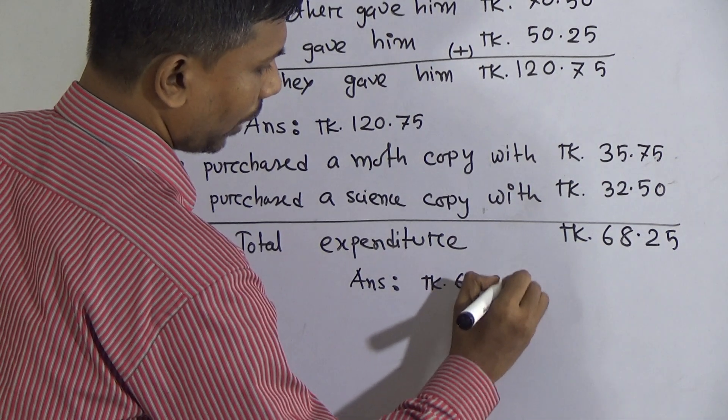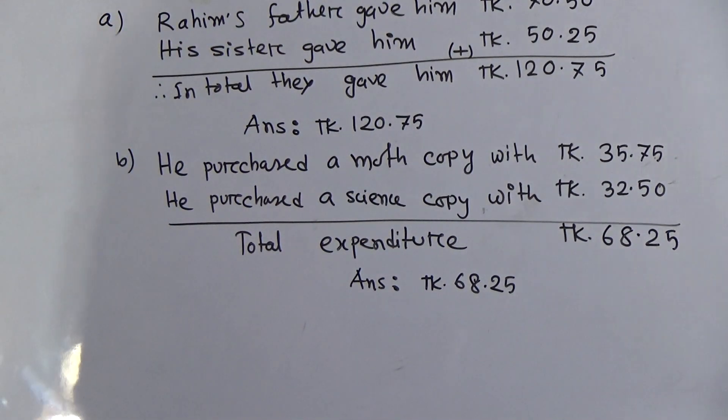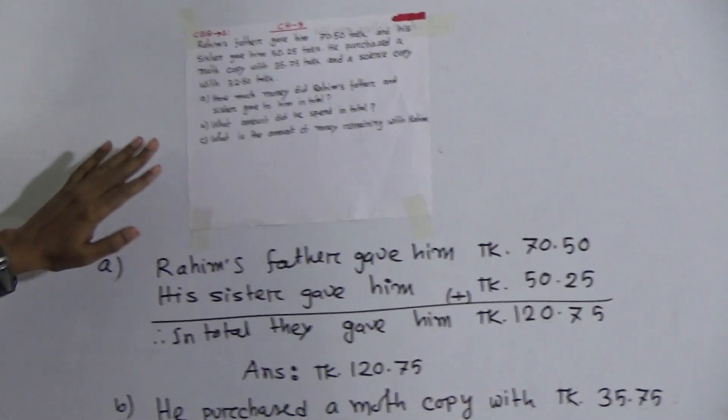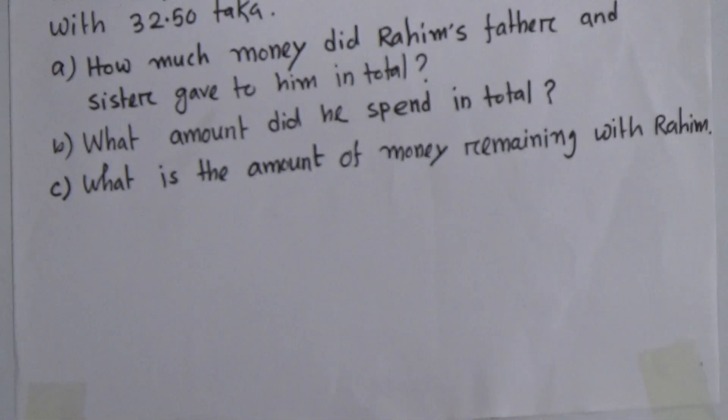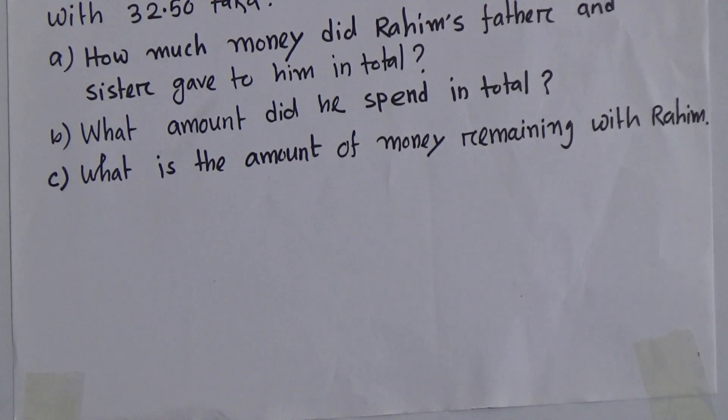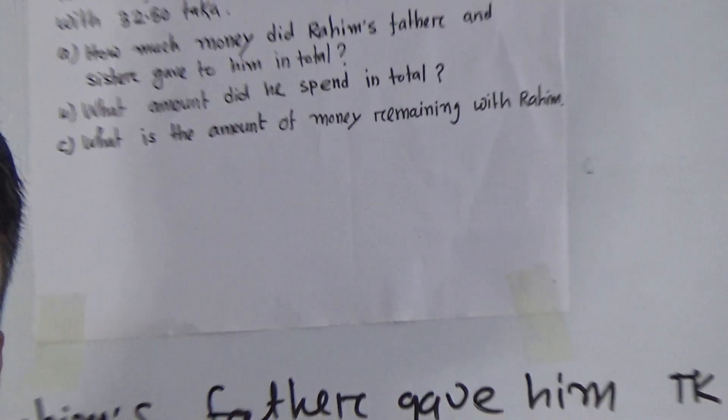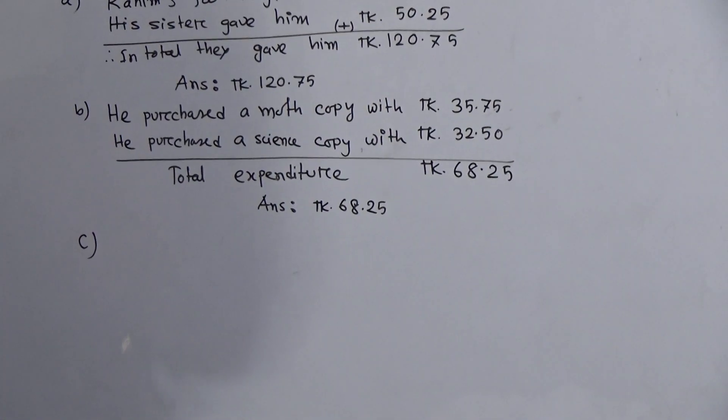Total expenditure is 68.25 taka. That means in total expenditure is 68.25 taka. Now I will solve question c. Again, please read the question: what is the amount of money remaining with Rahim? That means you see Rahim in total has 120.75 taka and he expenses 68.25 taka. So we have to write.